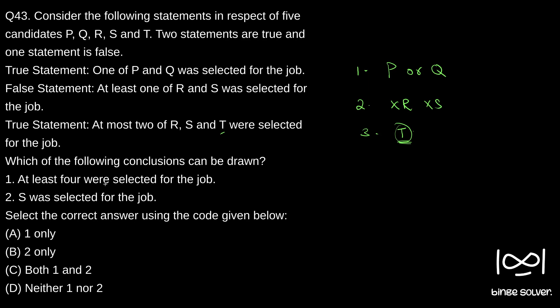Looking at conclusion one — at least four were selected for the job: only one of P or Q was selected, and R and S got rejected. We are not sure about T either. So we cannot conclude that at least four were selected for the job. We cannot draw conclusion one from the given statements.